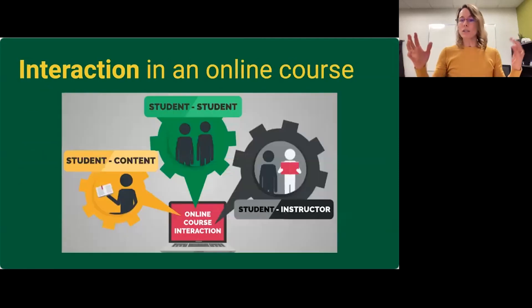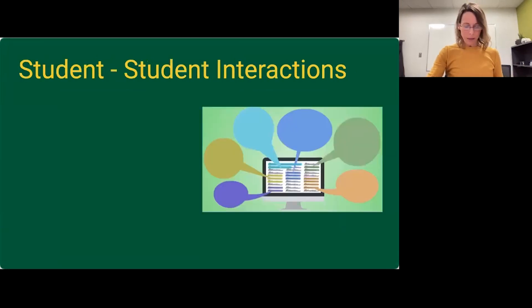In an online course, there's three types of interaction. We're not going to talk about the yellow one today, that's student and content interaction. We're talking about the green and the black, student to student and student to instructor, or the black one is more relating to the rapport that you build with students. And we'll go through these one at a time.